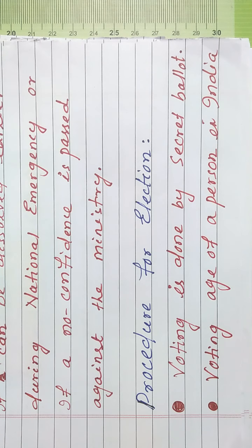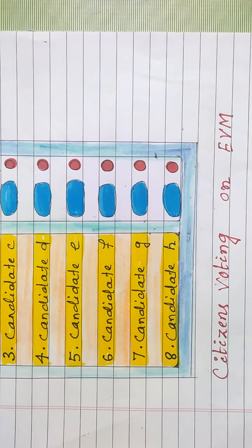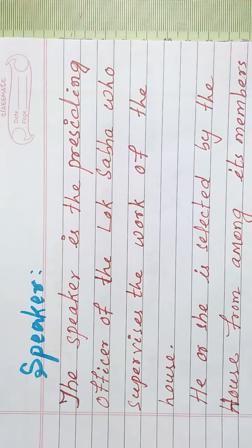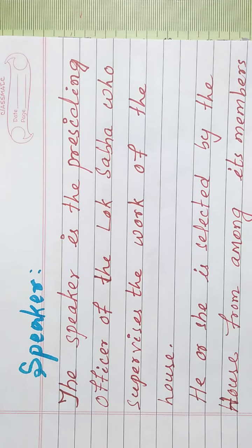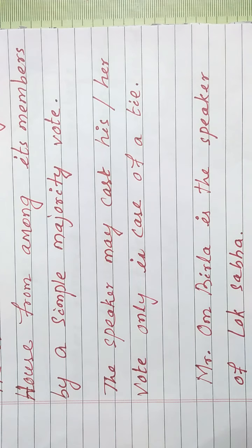The voting age of a person in India is 18 years or above. The voters give their opinion through the EBM machine. Citizens can choose a leader whom they think would be a good leader for them and for the country. The speaker is the presiding officer of the Lok Sabha who supervises the work of the house. He or she is selected by the house from among its members by a simple majority vote. The speaker may cast his or her vote only in case of a tie.